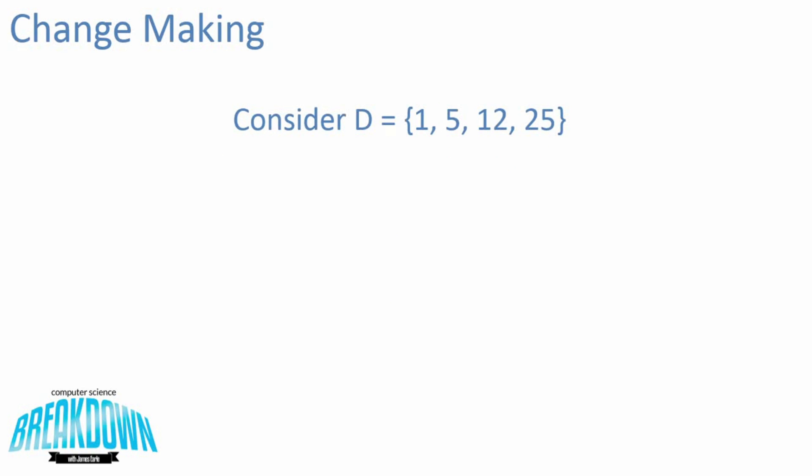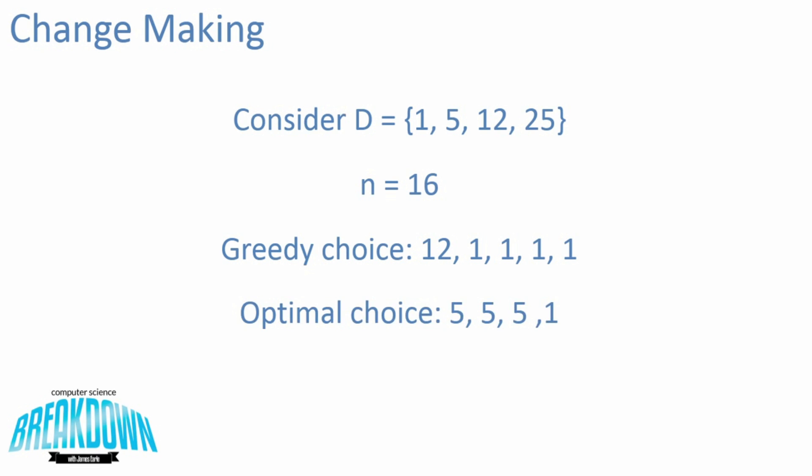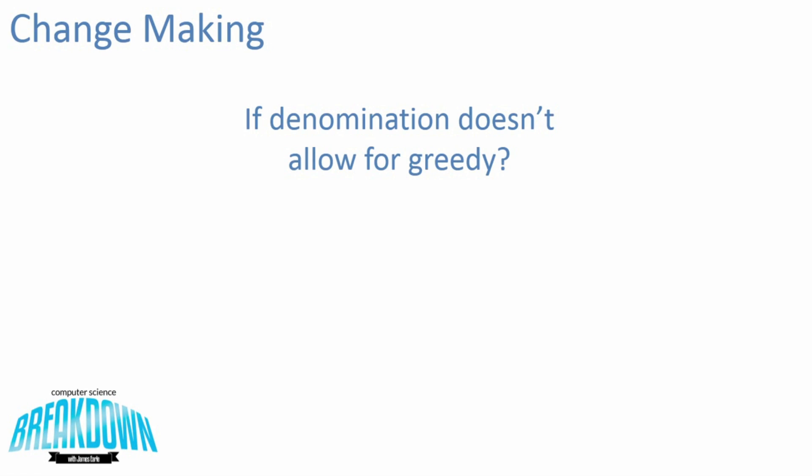But if you consider a denomination like a penny, a nickel, a 12-cent coin, and a quarter, you find that you can't use a greedy algorithm. For 16 cents, the greedy approach would take a 12-cent coin and then four pennies, but the optimal is actually three nickels and a single penny. So in cases where the denomination doesn't allow for greedy, we can use dynamic programming.